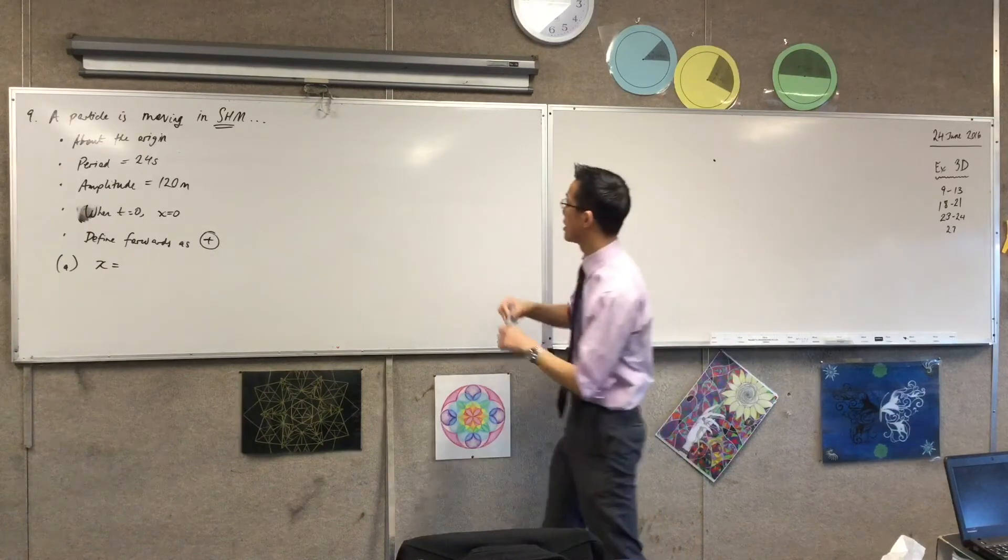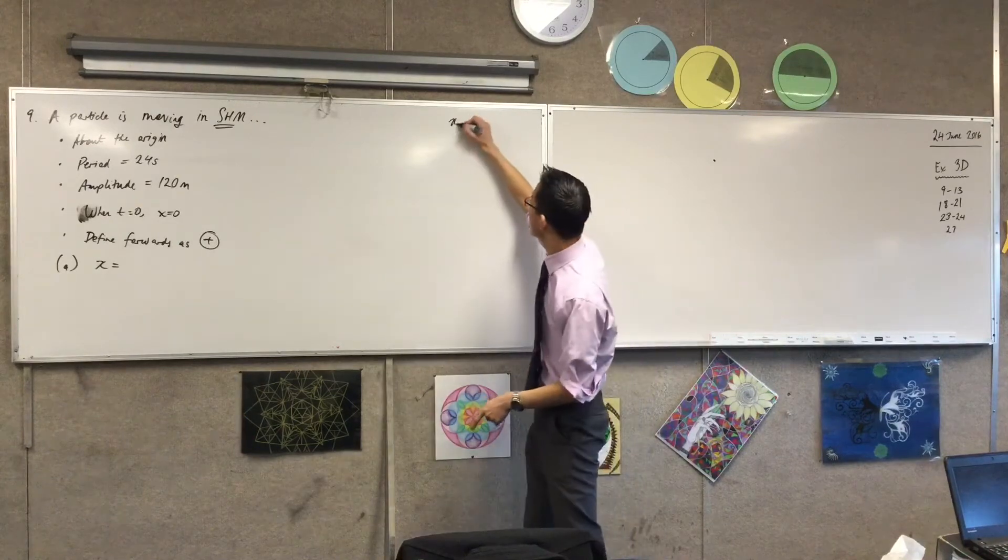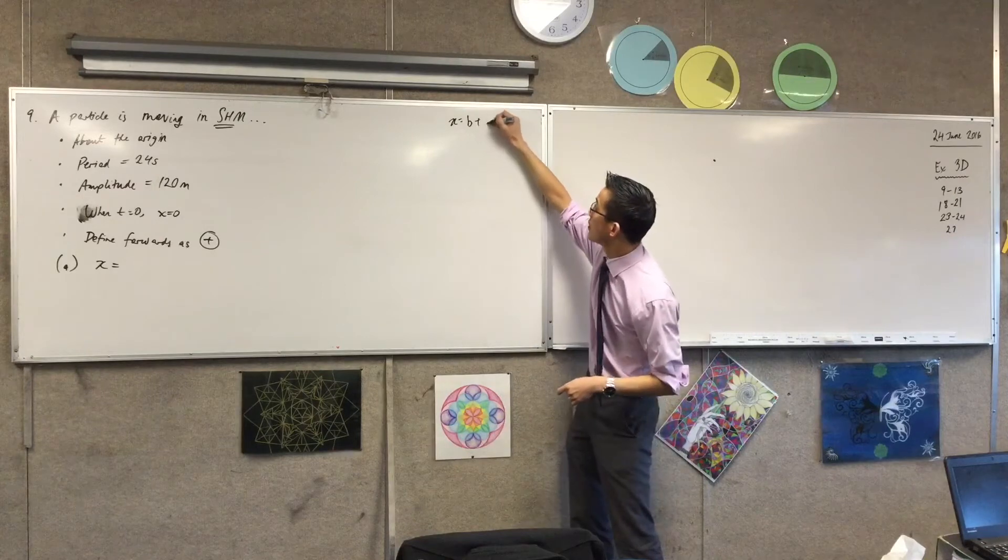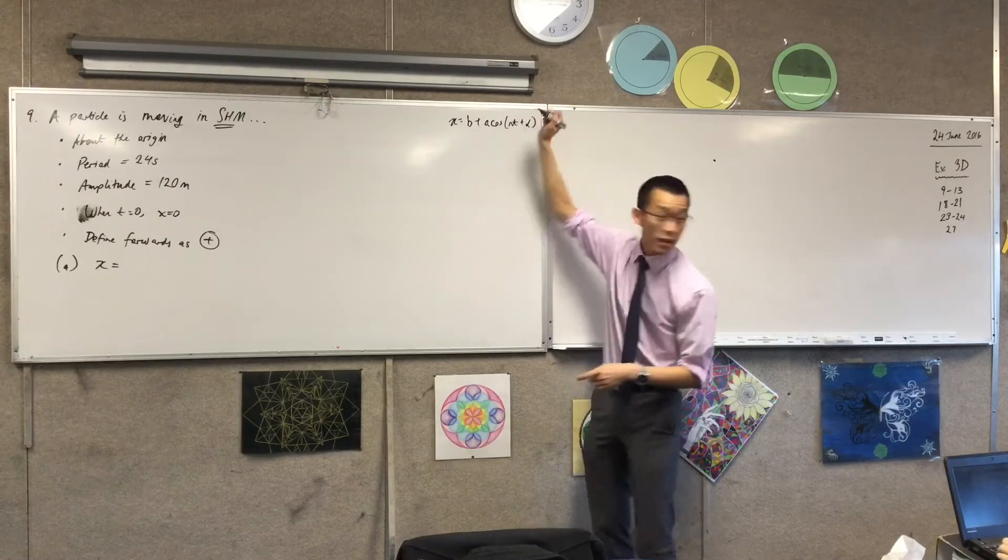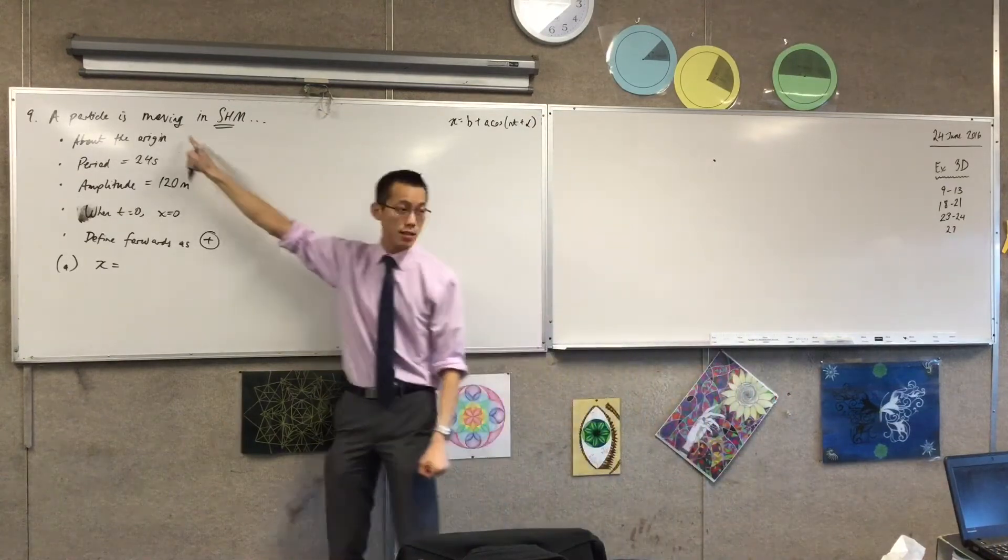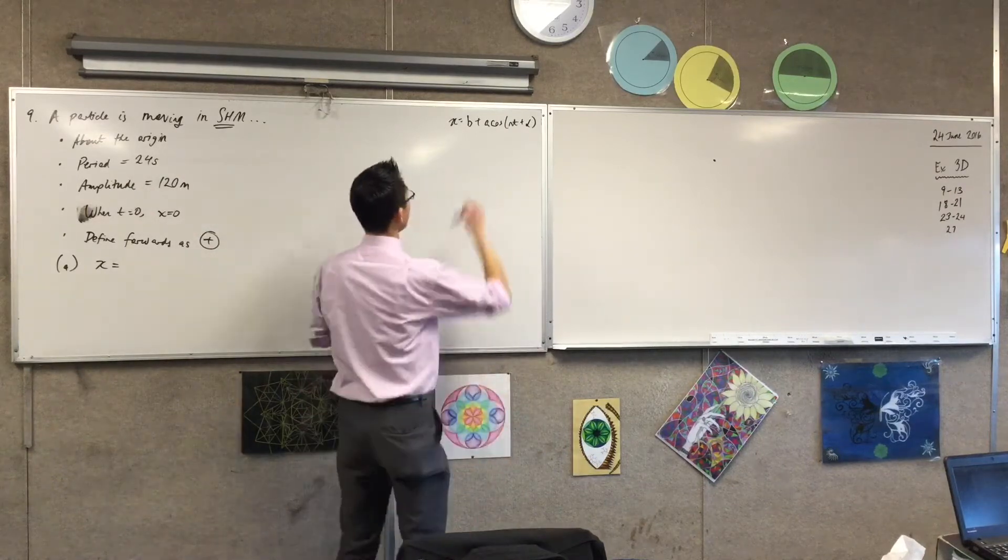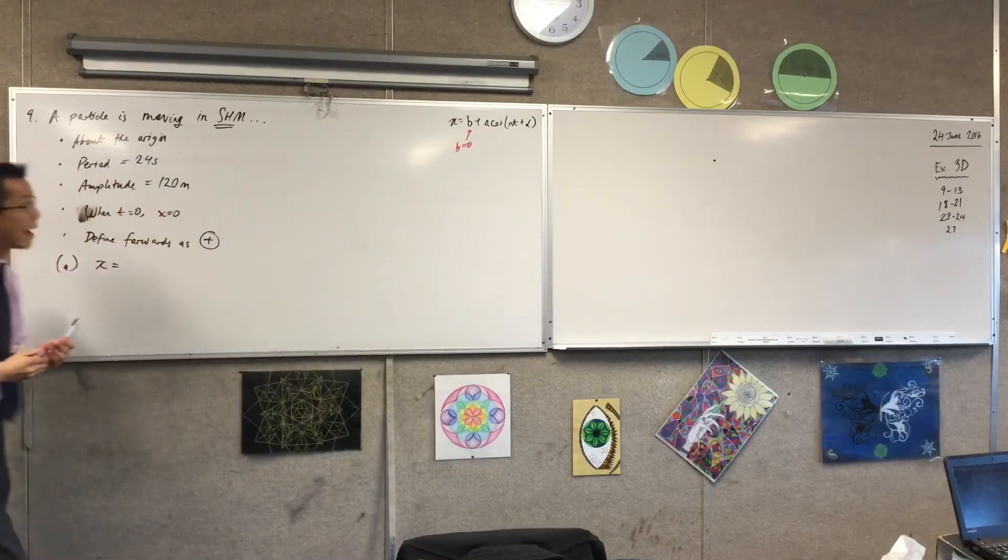If, for instance, can you quote for me what's the equation that's on the reference sheet? It'll say x equals b plus, I think it's a cos nt plus alpha, something like that. So of these constants, which one does this tell us about? It tells us about b, right? So I'm going to say b equals 0, because I'm moving about 0.